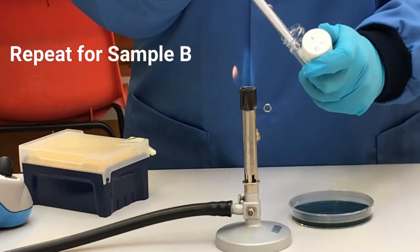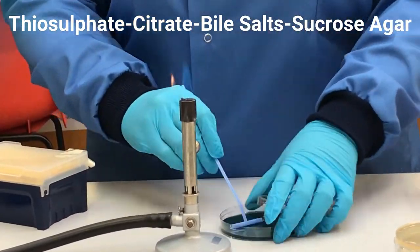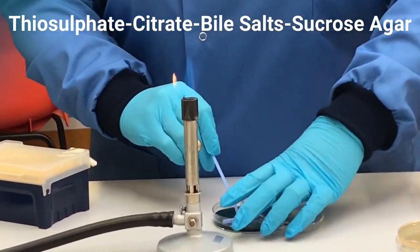Prepare spread plates in the same way for Sample B dilutions. Plates are then incubated at 37 degrees Celsius for 24 hours.